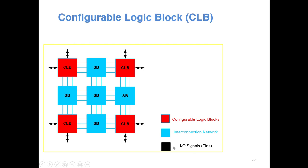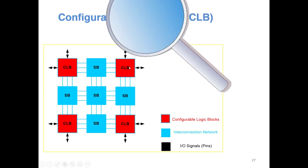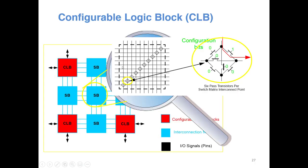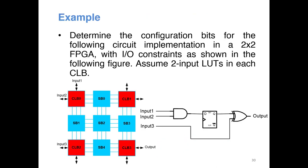In addition to CLBs and switch boxes, you can see I/O signals or pins. The CLBs on the periphery of the chip are connected to external pins using special wires so you can give signals from the external world. Modern FPGAs usually have hundreds or thousands of pins, often in the form of small balls called ball grid array packages or flat grid packages. These pins are connected to the CLBs on the periphery, which can then be connected to switch boxes and other CLBs.